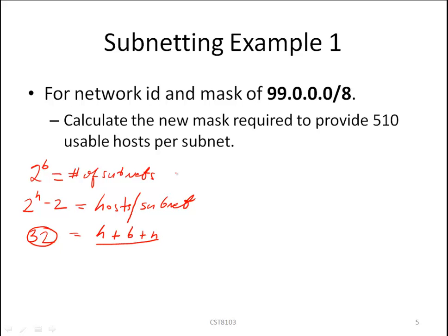So in this case we apply this formula that is 2 to the H minus 2 must be greater or equal to 510. So our objective here is to find the smallest value of H that meets this criteria. So let's simplify this equation to 2 to the H is greater or equal to 512.